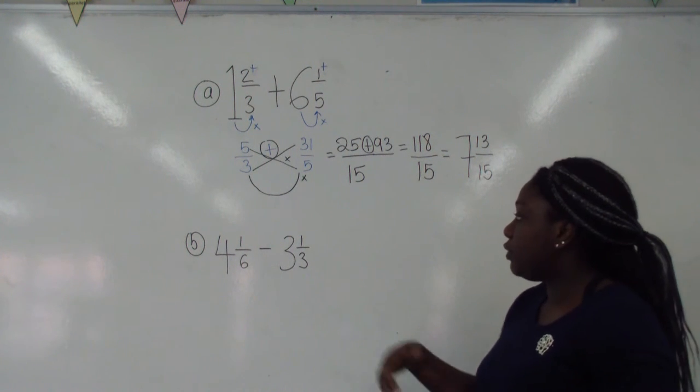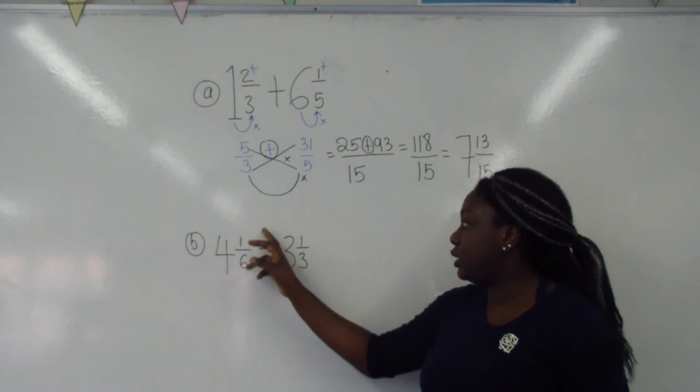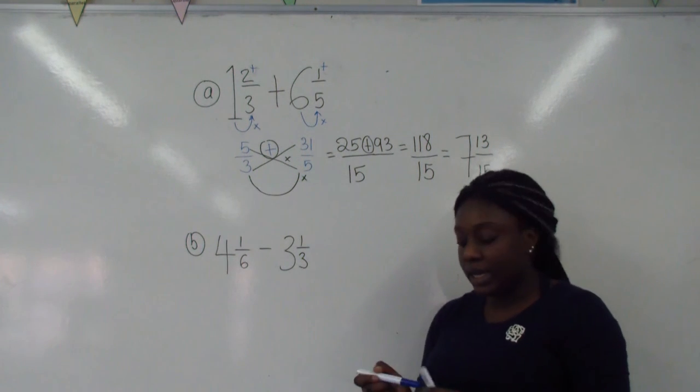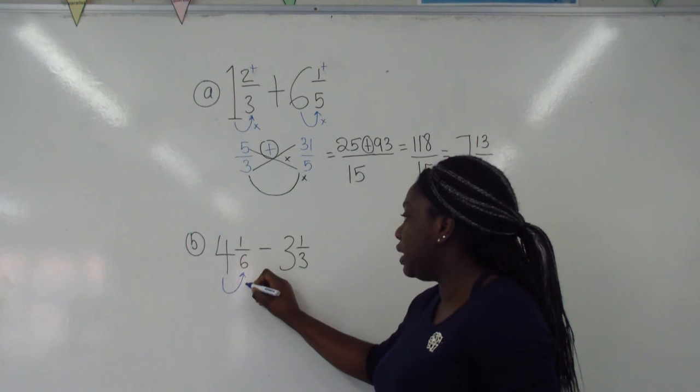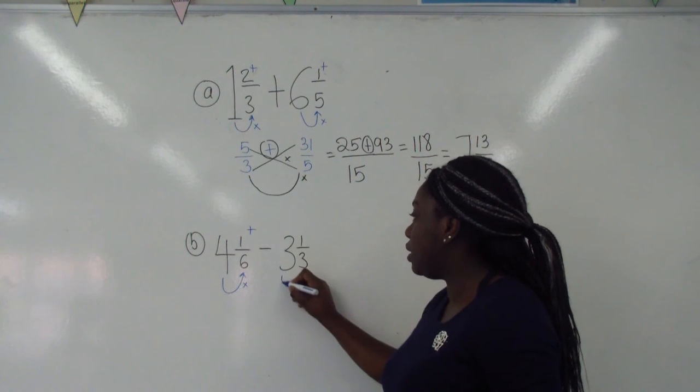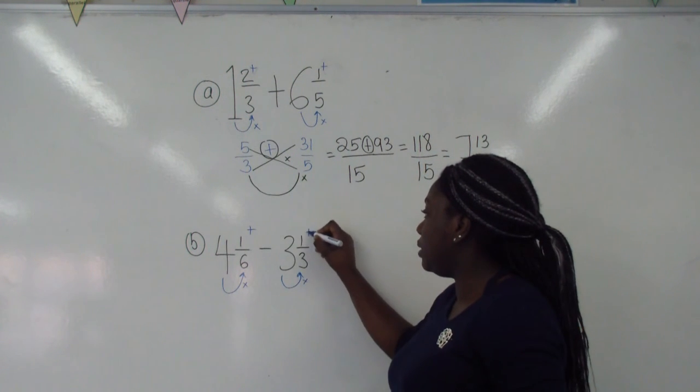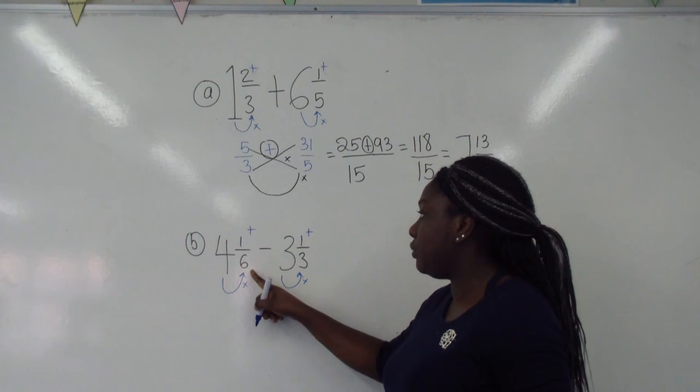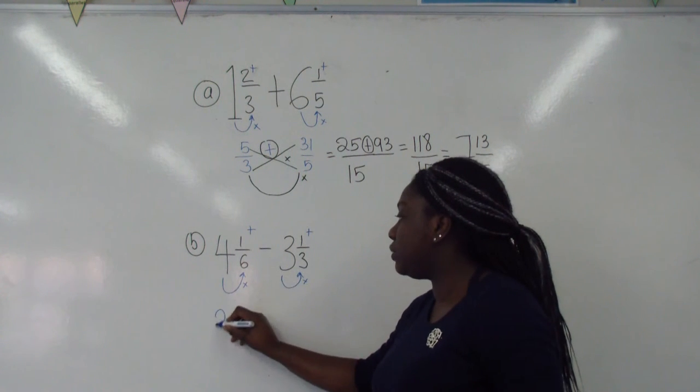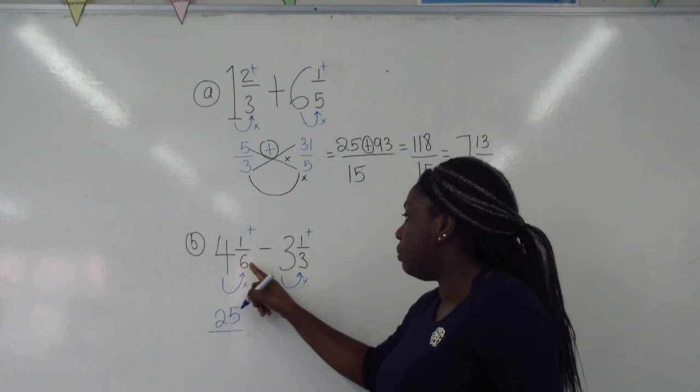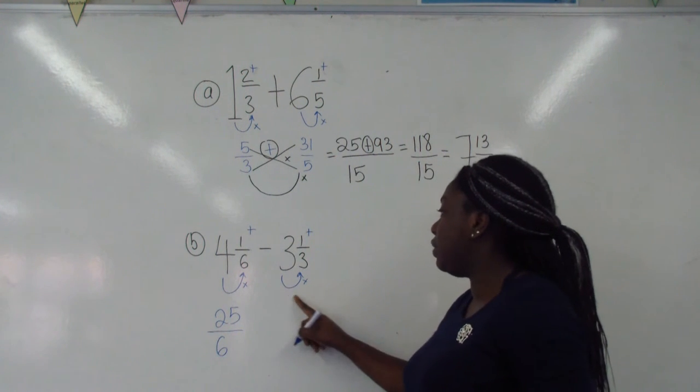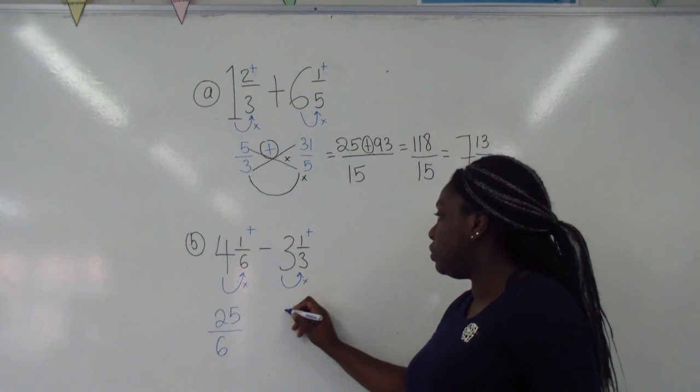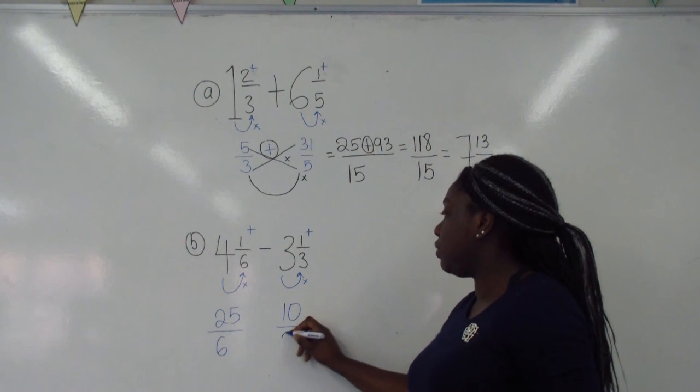Okay, so we've got another set of questions which this time around is taking away. We're going to change the mixed numbers into improper fractions. So we can do 4 times 6 which is 24, add the little one, 25 out of 6. 3 times 3 is 9, add the little one which is 10 out of 3.